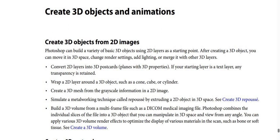How to create 3D objects and animations. Photoshop can create 3D objects from 2D images, compiling a variety of basic 3D objects using 2D layers. After creating a 3D object you can move it in 3D space, change render settings, add lighting, or merge it with other 3D layers. You can also convert 2D layers into 3D.